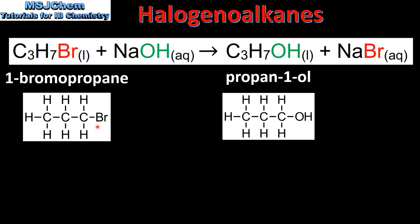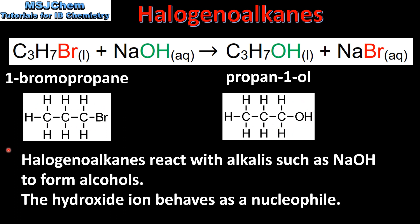So we have a primary halogeanoalkane forming a primary alcohol. To summarise: halogeanoalkanes react with alkalis such as sodium hydroxide to form alcohols, and the hydroxide ion behaves as a nucleophile. Don't forget to check the video description for a link to a practice worksheet.